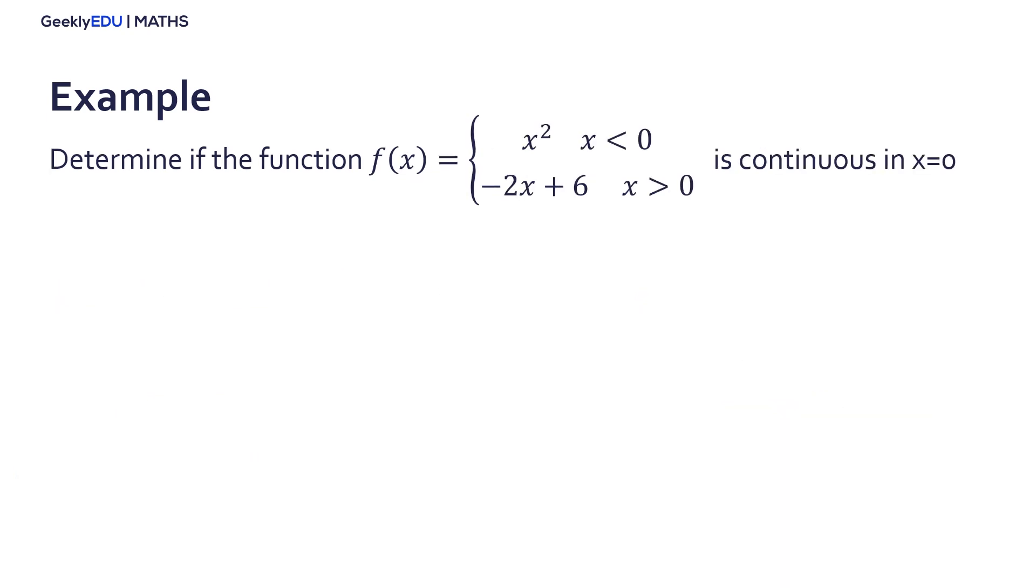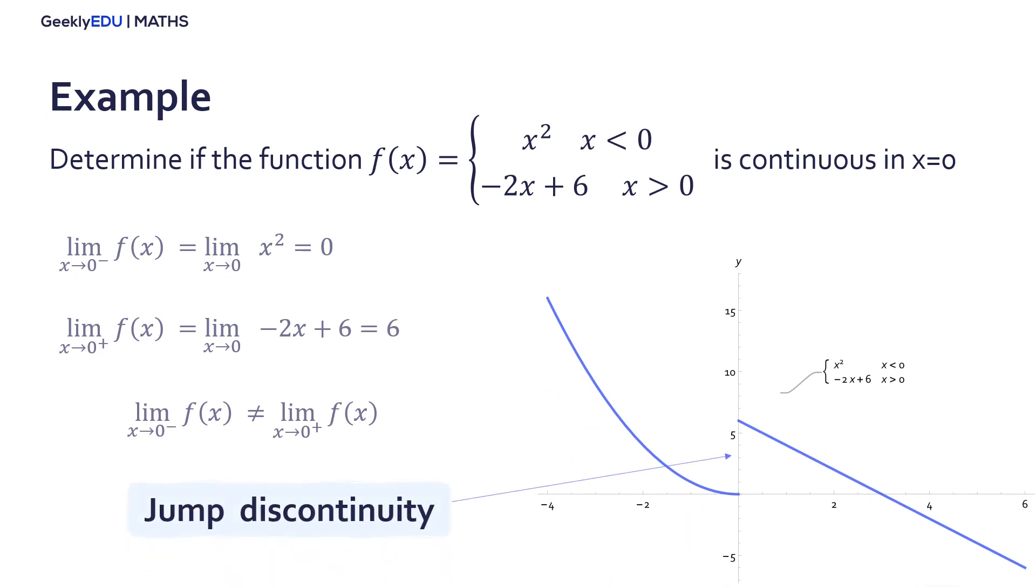Let's solve one last example of a piecewise function. We know that the function will be continuous in a point if the left and right limit of the function in a given point are equal. First, calculate the limit from the left. When the function is x squared and x tends to 0, the limit is equal to 0. And evaluating the limit from the right, when the function is minus 2x plus 6, we will evaluate the limit in 0 and it gives us 6. In this case the limits are different and therefore we have a discontinuity. This type of discontinuity in 0 is called a jump discontinuity.